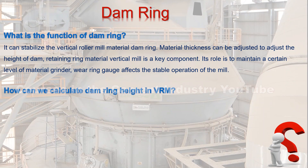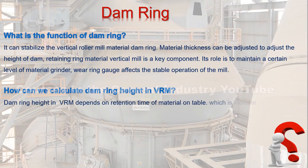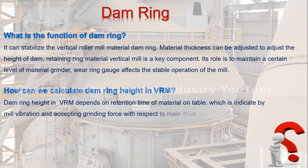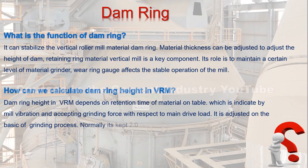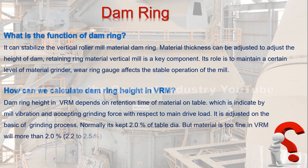How can we calculate dam ring height in a vertical roller mill? Dam ring height depends on the retention time of material on the table, which is indicated by mill vibration and acceptable grinding force with respect to main drive load. It is adjusted on the basis of the grinding process. Normally it is kept at two percent of the table diameter, but if the material is too fine, it will be more than two percent — typically 2.2 to 2.5 percent.